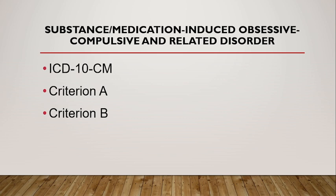The criteria judged to be attributed to the effects of a substance — for example, a drug of abuse or medication — require that the obsessive compulsive and related disorder symptoms must have developed during or soon after substance intoxication or withdrawal, or after exposure to or withdrawal from the medication or toxin. The substance or medication must be capable of producing the symptoms. Substance medication-induced OCD due to prescribed treatment for a mental disorder or medical condition must have its onset while the individual is receiving the medication. Once treatment is discontinued, symptoms will usually improve or remit within days to weeks, depending on the half-life of the substance or medication and the presence of withdrawal.